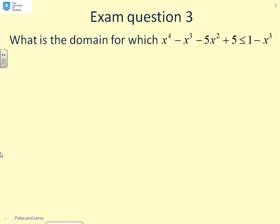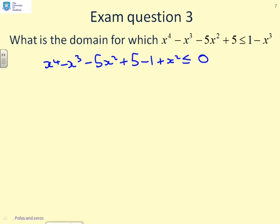Exam question 3. What is the domain for which x to the 4 minus x cubed minus 5x squared plus 5 is less than or equal to 1 minus x cubed? This one is surprisingly easy. First I move everything to the same side: x to the 4 minus x cubed minus 5x squared plus 5 minus 1 plus x cubed, less than or equal to 0. Notice something convenient — the x cubed and the x cubed cancel. So what we're left with is x to the 4 minus 5x squared plus 4, less than or equal to 0.